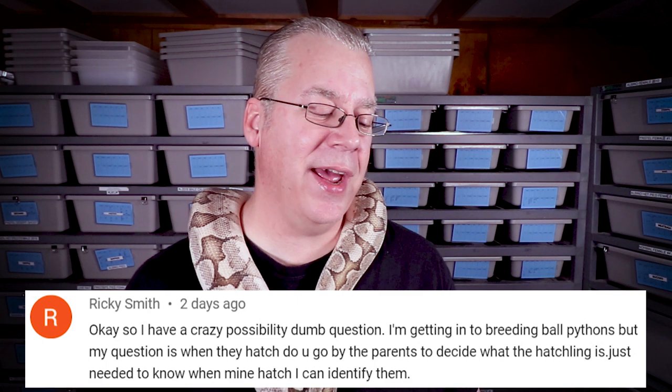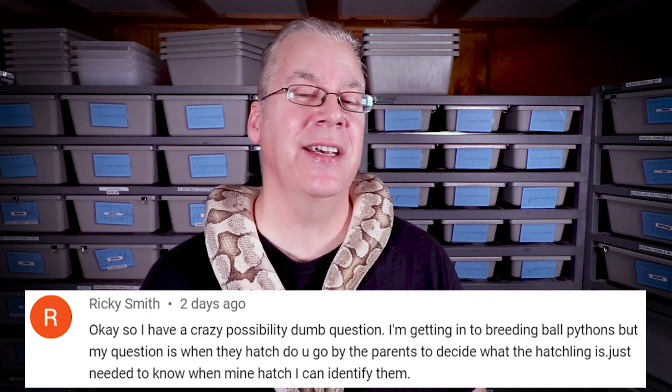Next question from Ricky Smith: when hatchlings come out, do you go by the parents to decide what a hatchling is? I'd say identifying the genes in hatchlings is probably the hardest part of breeding ball pythons, especially with four, five, or six genes you've never produced before. I do a lot of egg-cutting videos where I misidentify things when first looking into the egg or box straight from the incubator — you're like, wait, that can't be that combination, it has to be something else.